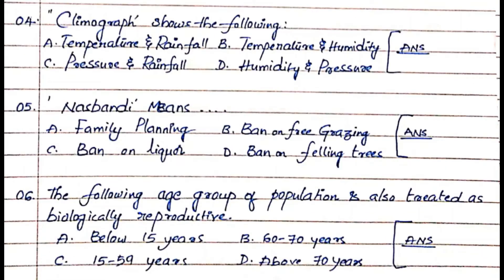Question number 4: A Climograph or Climatograph shows the following. Option A. Temperature and Rainfall, Option B. Temperature and Humidity, Option C. Pressure and Rainfall, Option D. Humidity and Pressure. The answer is Option A. Temperature and Rainfall.